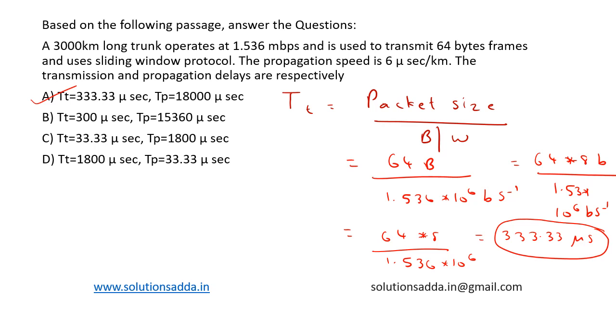It is given that 1 kilometer is traveled in 6 microseconds, so for 3000 kilometers the propagation delay can be calculated as 3000 times 6, so it is equal to 18,000 microseconds. This will be the propagation delay to travel 3000 kilometers. So option A is the correct answer here.